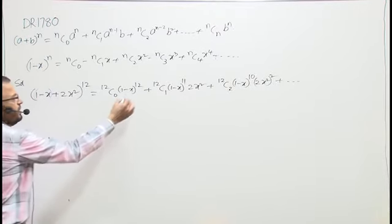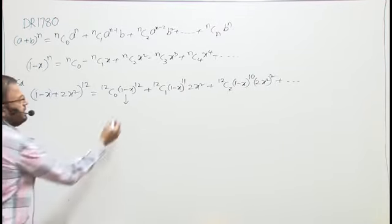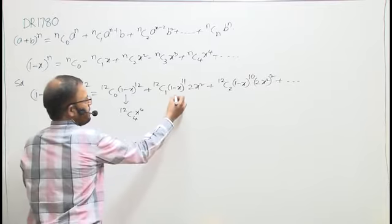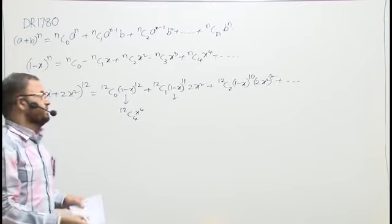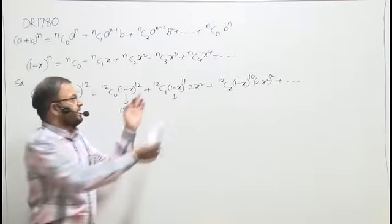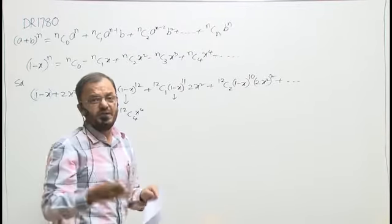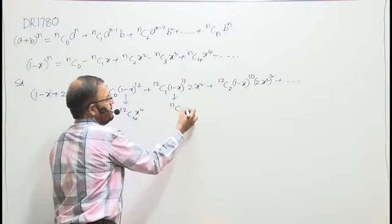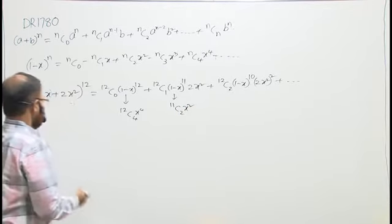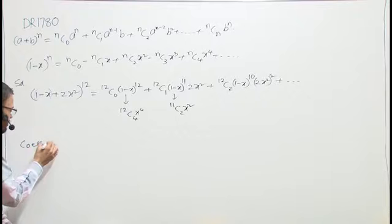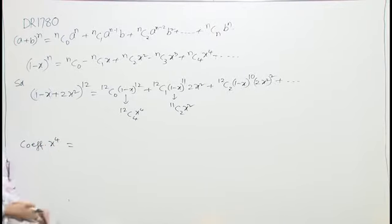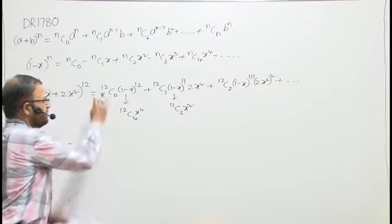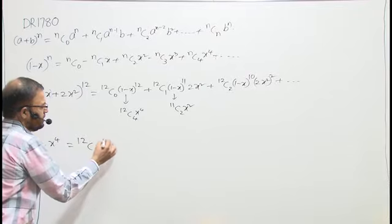From the first term I want x⁴, so I take 12C4 · x⁴. From the second term, x² is already there, so when I expand (1-x)^11 I need the x² term. The coefficient of x⁴ equals: from the first part — 12C0 · 12C4, which gives one term with x⁴.